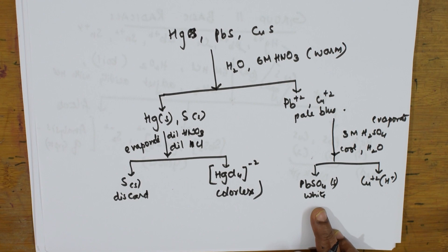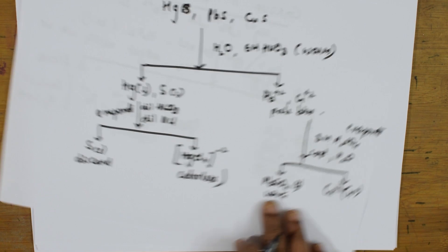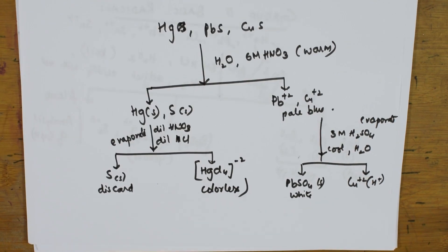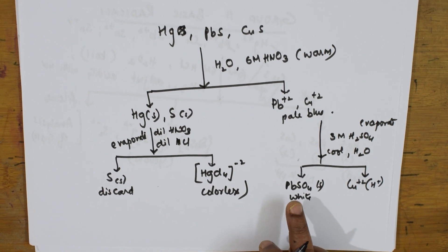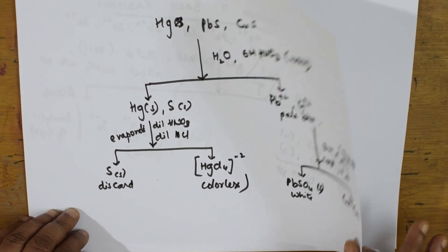This PbSO₄ whatever is there, it is a white PPT which we are getting, which will confirm that it is lead cation. This HgCl₄²⁻ colorless will confirm mercury Hg²⁺. You can further do, you can further add to this, let's see what can we do further to this if you want to further test this.